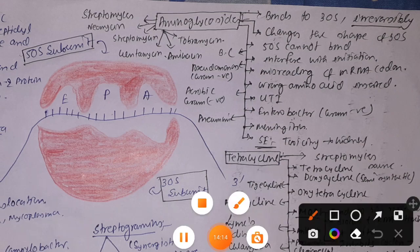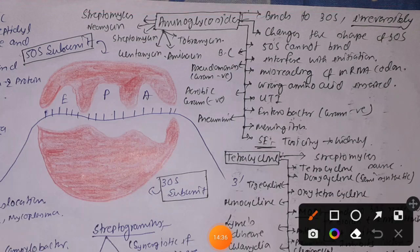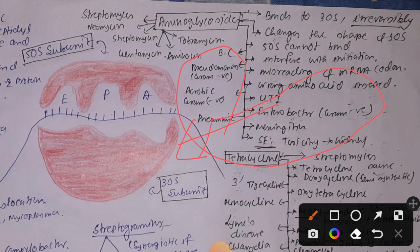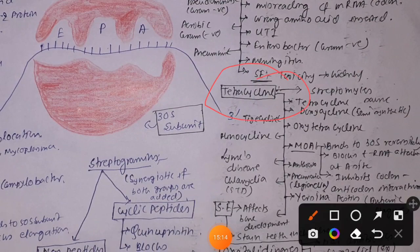To revise 30S subunit inhibitors: aminoglycosides bind irreversibly to the 30S ribosomal subunit, causing a shape change that prevents 50S binding, interferes with initiation, causes mRNA misreading, and inserts wrong amino acids. They are used against Pseudomonas, gram-negative Enterobacter, gram-negative aerobic bacteria, meningitis, and UTI. Side effect: nephrotoxicity.